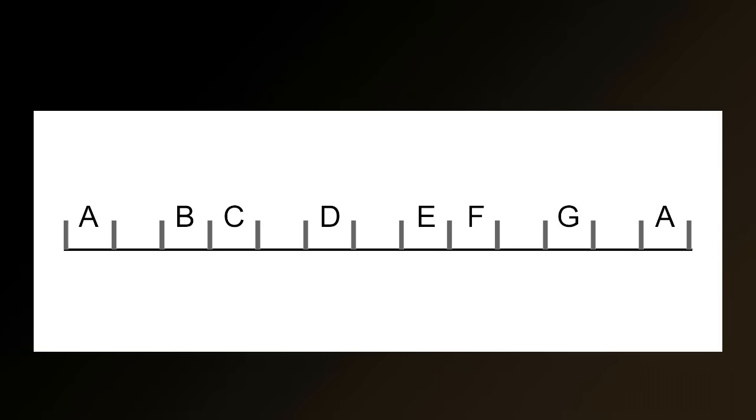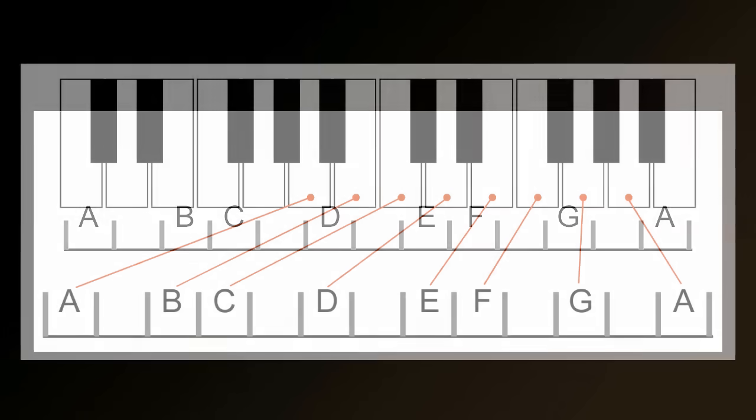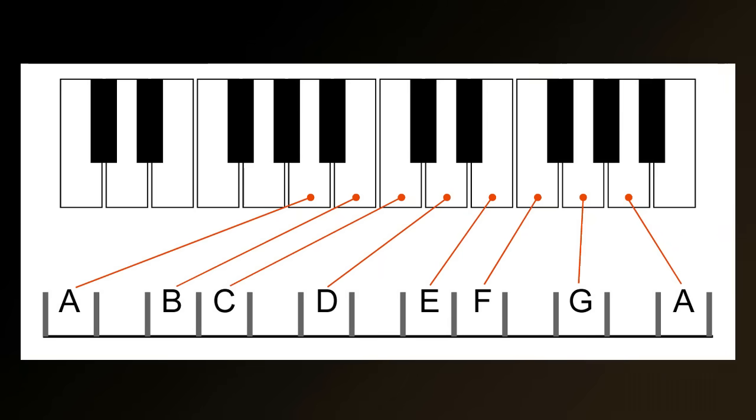Looking at this on the neck of a guitar, you can see there's a gap between A and B, C and D, D and E, F and G, and G and A. This is a universal musical pattern and it can be seen most clearly on a keyboard or a piano.